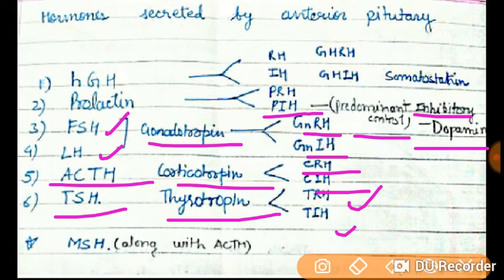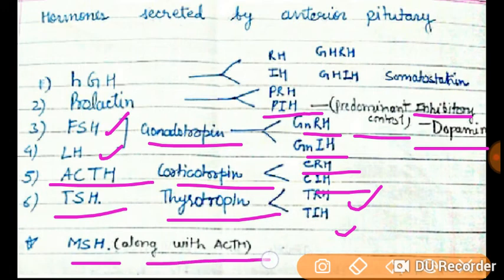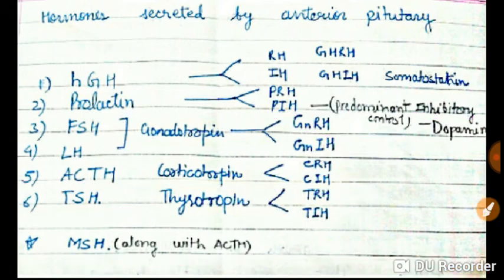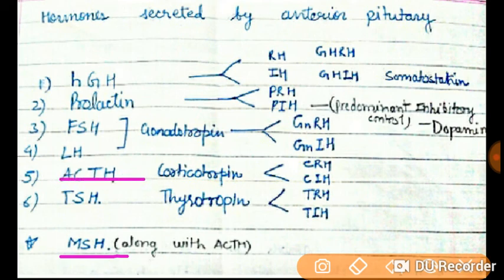An important question concerns Melanocyte Stimulating Hormone (MSH). Generally, MSH is secreted by the intermediate lobe of the pituitary gland. However, in humans specifically, MSH is secreted along with ACTH.